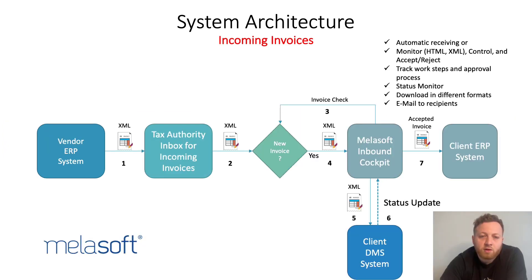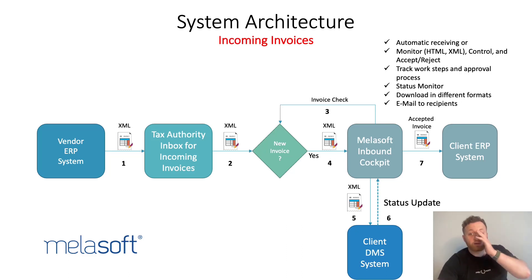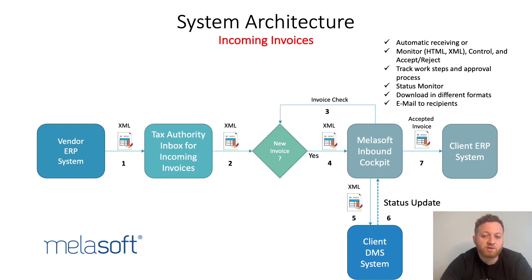Here is the general architecture for incoming invoices. The invoice is created in the ERP system of the vendor and is sent to the government portal. The created invoice can be managed using the inbound cockpit, and the documents can be viewed in different formats including HTML and XML. The invoices can be accepted or rejected over the cockpit. As the XML file is accepted, it is sent to the ERP system — your SAP system — for accounting processes. The status of the document can be monitored throughout the entire process in the Malasoft cockpit.